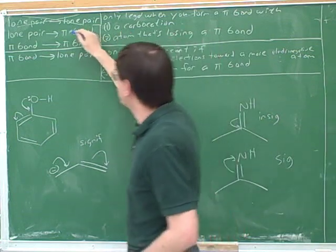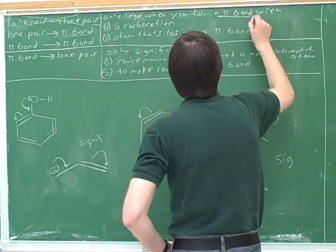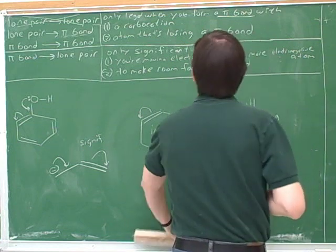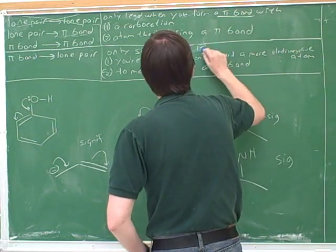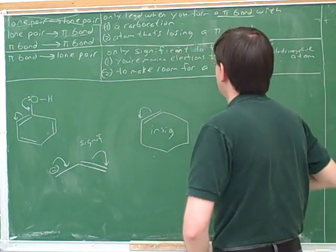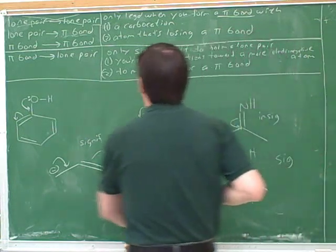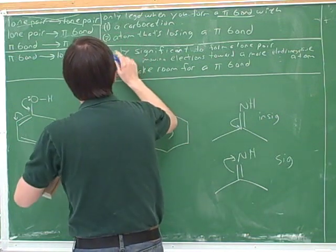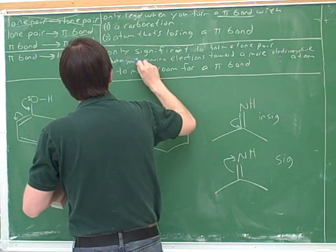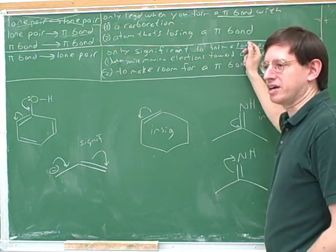When you're forming pi bonds, you have to check legality — I'll underline this one. And it's only significant to form a lone pair when we have one of the two characteristics: moving toward a more electronegative element, or making room for an incoming pi bond. When you're forming a pi bond, you check legality. When you're forming a lone pair, you check significance.